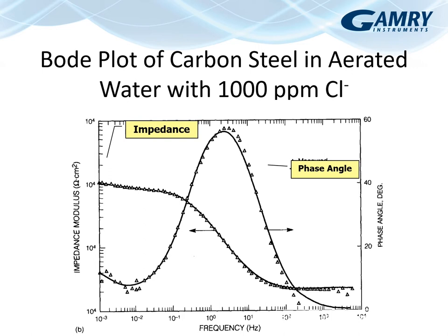Here's some real data — a Bode plot of carbon steel in aerated water with 1000 ppm chloride. One thing to note: this is an older dataset and you will sometimes see people flip the phase angle signs. Because people like to see things in a positive quadrant, the phase angle has been plotted from 0 to 60 degrees, but the actual notation should be 0 to minus 60 degrees. Capacitive phase angles are negative, not positive.